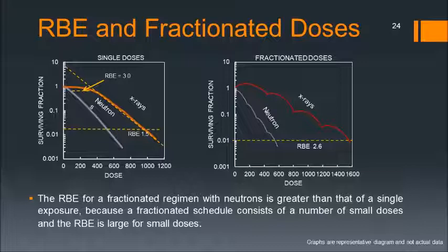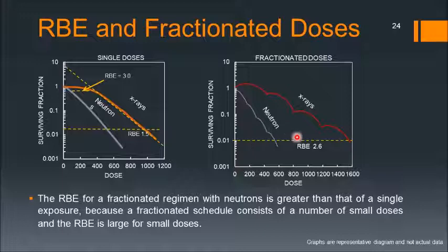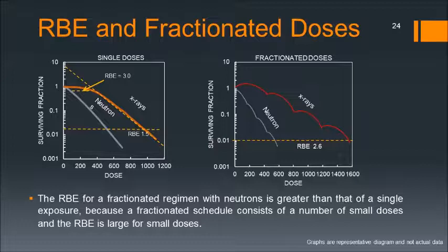RBE for fractionated doses is higher than for a single dose. If you look at neutron cell survival curves, a single dose gives a very steep downward curve, whereas if you fractionate it, the RBE becomes larger. The RBE is larger for neutrons in a fractionated regimen than for a single exposure. The reason is that a fractionated schedule consists of small doses, and for small doses the RBE is larger.